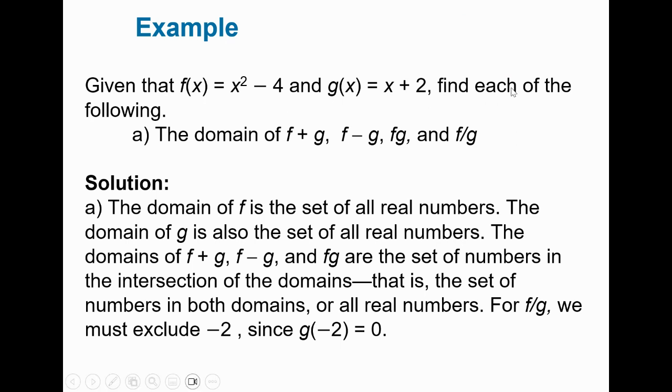Given that f of x is x squared minus 4, g of x is x plus 2, find each. The domain of f plus g. The domain of f is the set of all real numbers. The domain of g is the set of all real numbers. Notice you don't have any fraction here, nor do you have a radical. Same here with g of x, so all real numbers will be fine. The domain of f plus g and f minus g and f times g are the set of numbers in the intersection of the domains. That is the set of numbers that are in both domains. Well, since both domains contain all real numbers, their intersection is all real numbers.